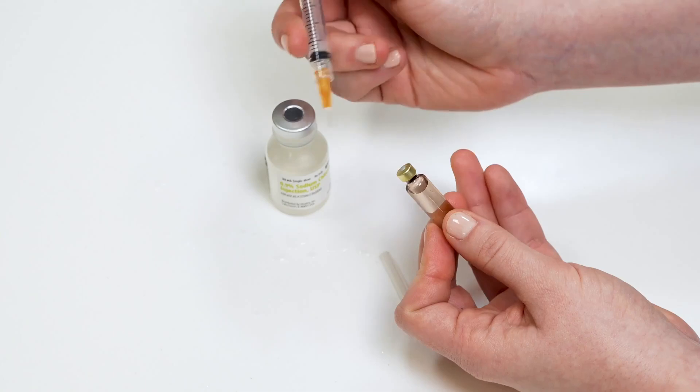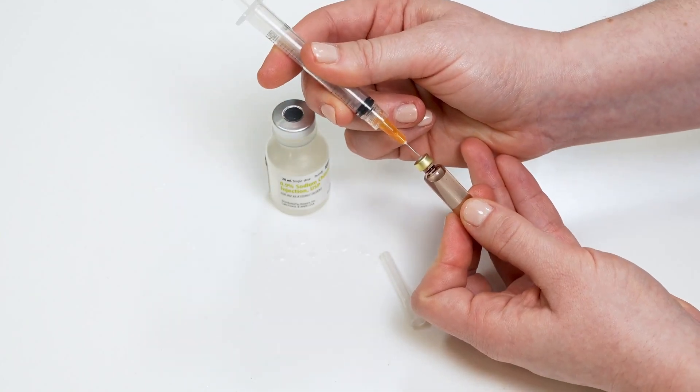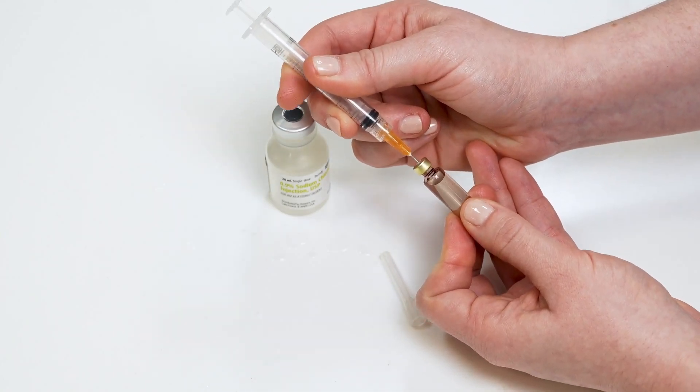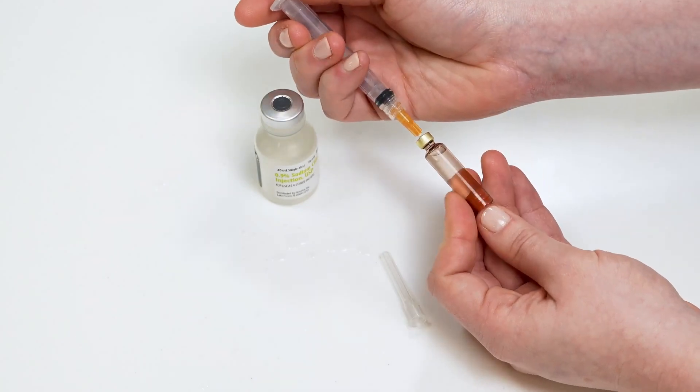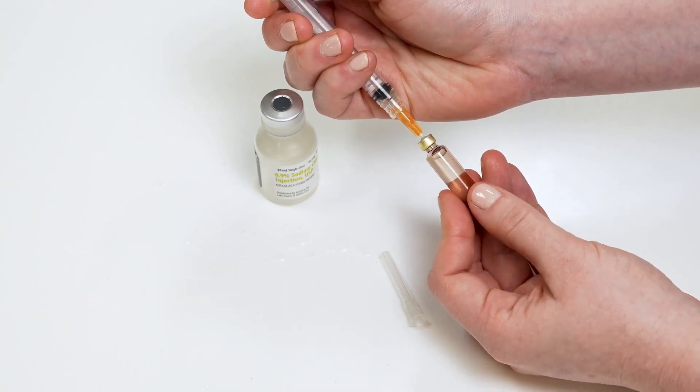Carefully reinsert the needle, but only push the needle in a little bit, so the tip of the needle is in the bubble. Pull back slightly on the syringe plunger rod to remove the bubble.